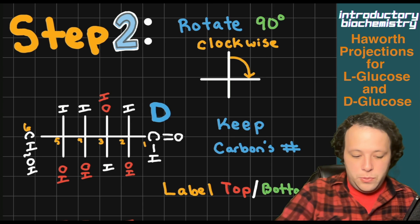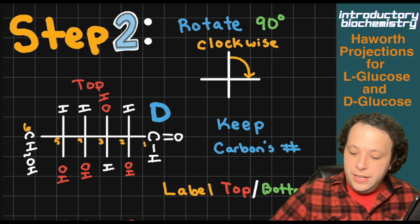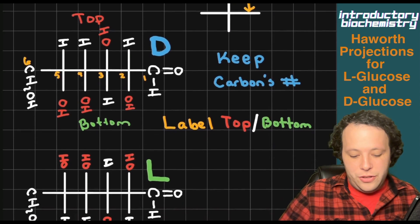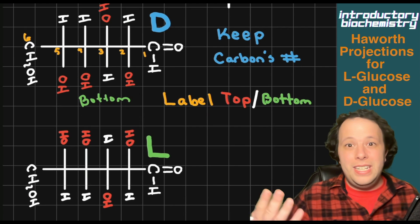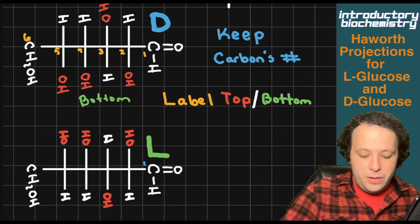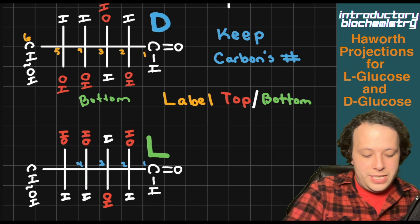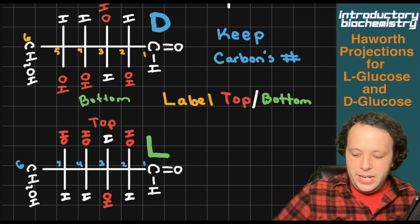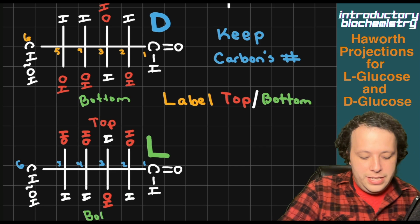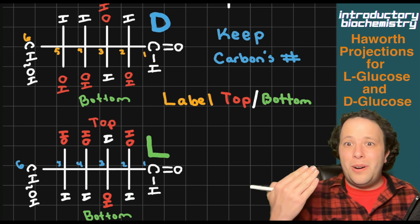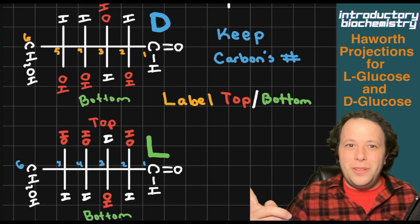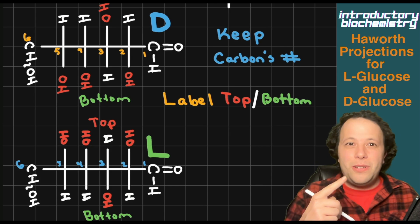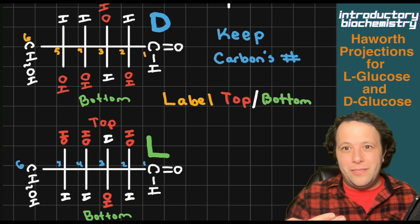So what we'll do is label that — this is going to be top, and in green we are going to have bottom. It's going to be the same idea too for the other structure, the enantiomer. For D and L, we'll keep the same idea and number it as well: one, two, three, four, five, six, and we will also have our top and bottom for L. You can see already that both of these are flipped as a result of being a different isomer. So all the OHs for the L one are going to be pointing up, whereas for D most of them are pointing down. So it's going to be a really big difference in our structure.